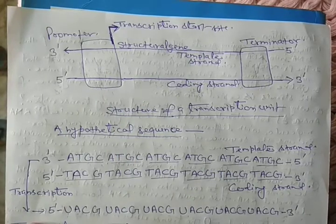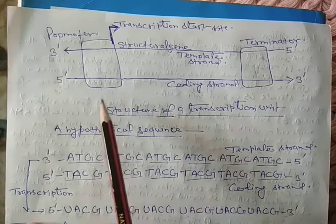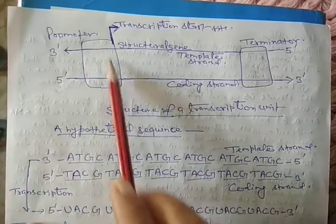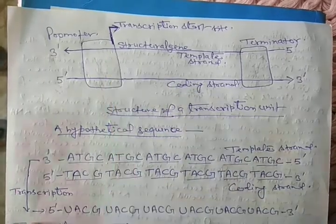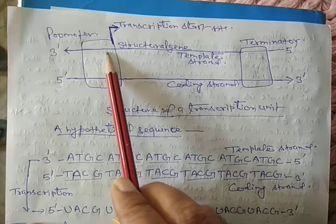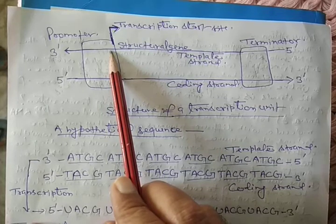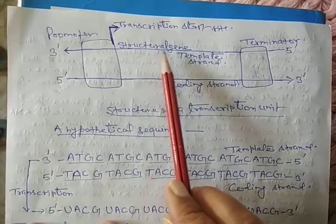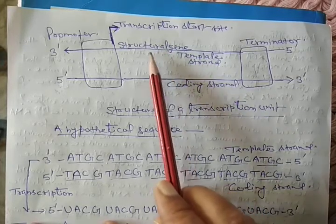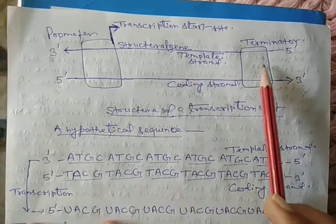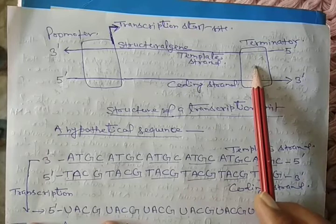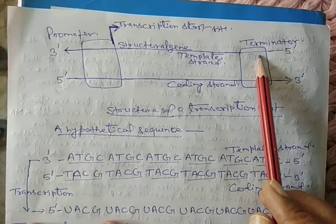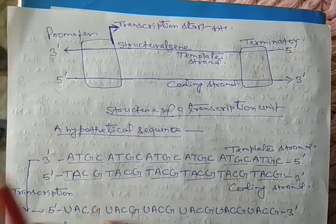When RNA polymerase attaches to the template strand at the promoter region, it initiates the process of transcription. The structural genes are the genes which are transcribed into protein or enzyme. At the end of the transcription unit, there is the terminator region. When RNA polymerase reaches the terminator region, the RNA polymerase is separated and the newly formed RNA strand is also released.